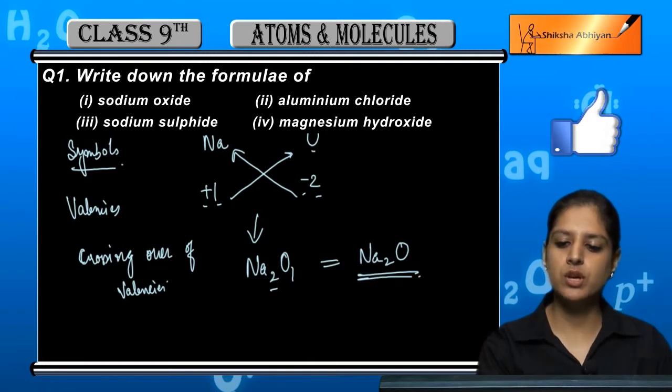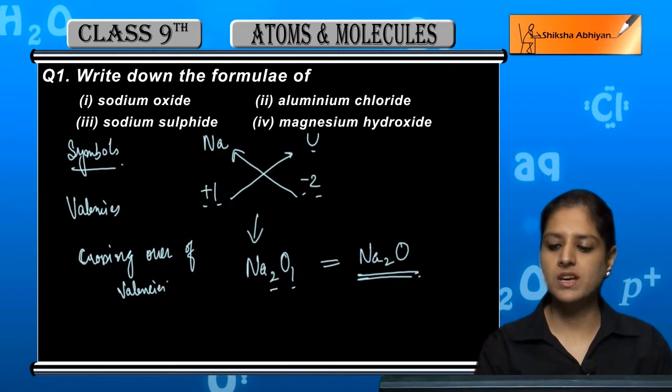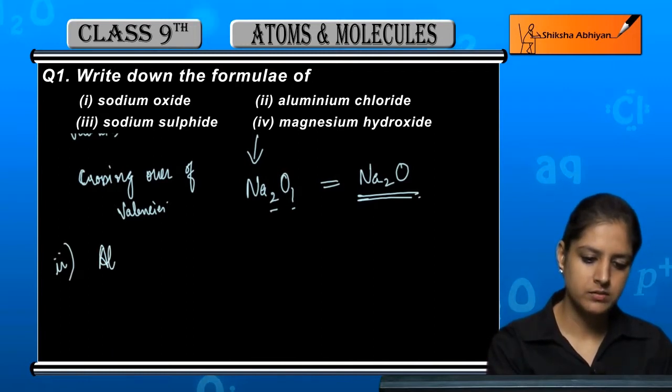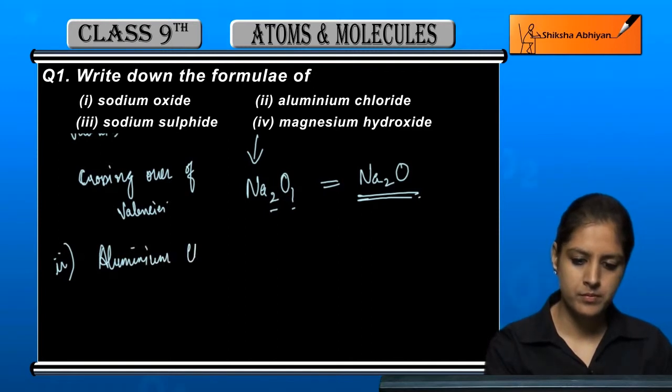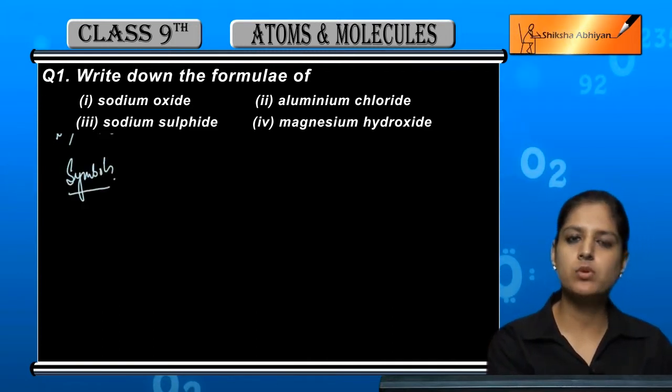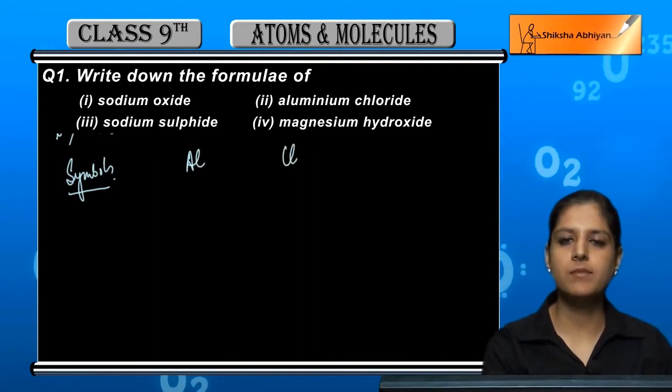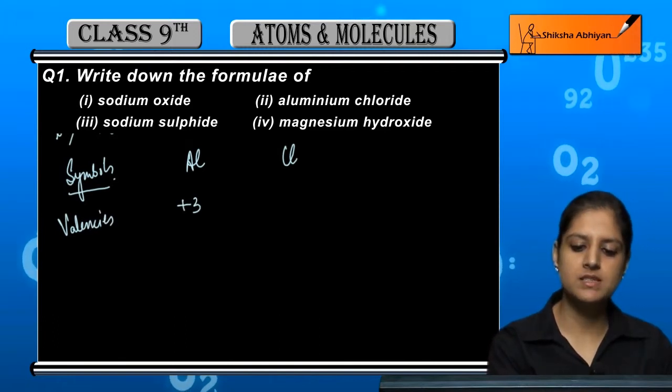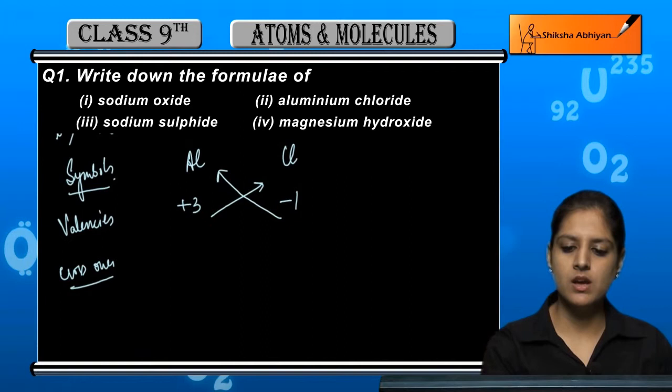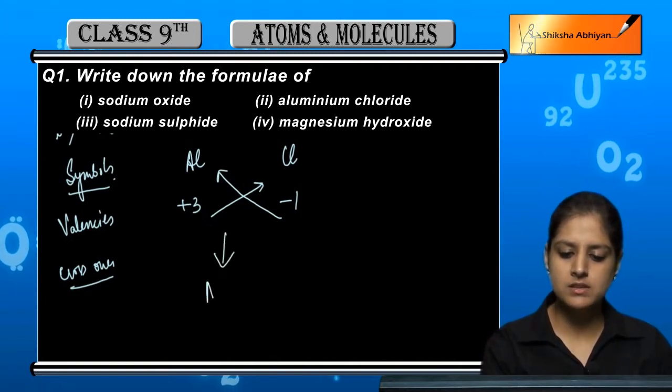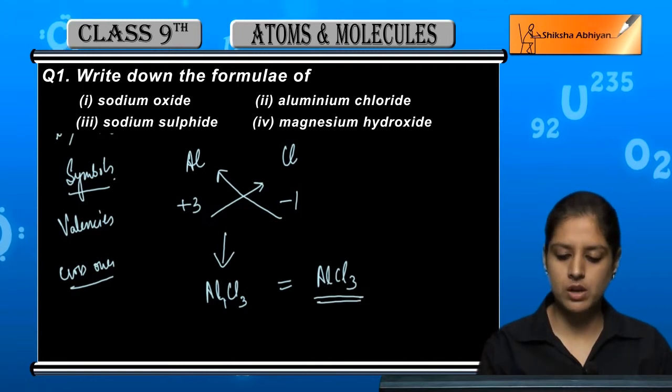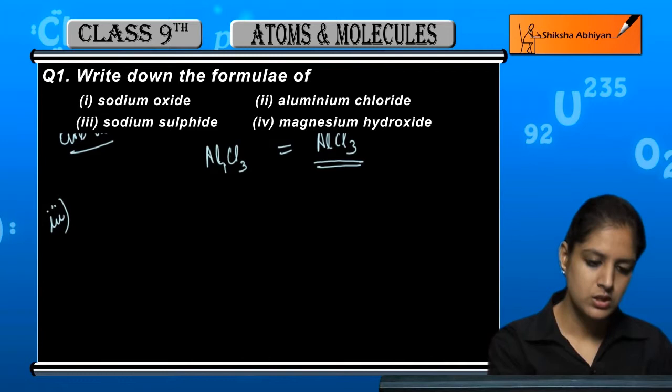It is aluminium chloride. The formula is Al1Cl3, or AlCl3. Aluminium chloride is AlCl3. Next is sodium sulphide.